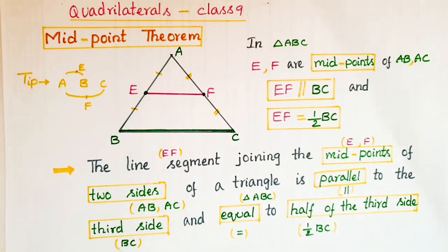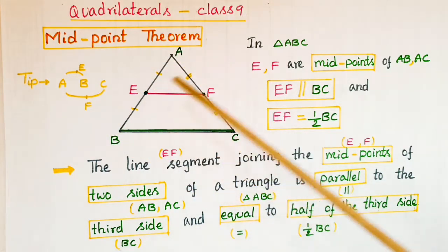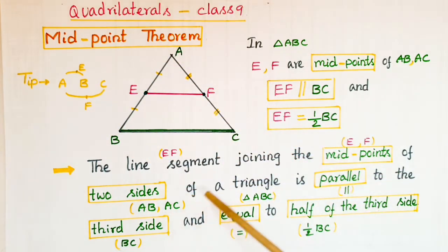Now the Midpoint Theorem states: the line segment joining the midpoints of two sides of a triangle (here the midpoints E and F of sides AB and AC) is parallel to the third side. So EF is parallel to the third side BC and equal to half of the third side, meaning EF equals half of BC.